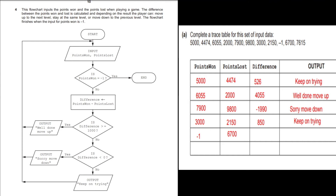Coming to the fourth question. This flowchart inputs the points won and points lost when playing a game. The difference between points won and lost is calculated and depending on the result, the player can move up to the next level, stay at the same level, or move to the previous level. The flowchart finishes when the input for points won is minus 1. Part A requires us to complete a trace table for the given set of input data.